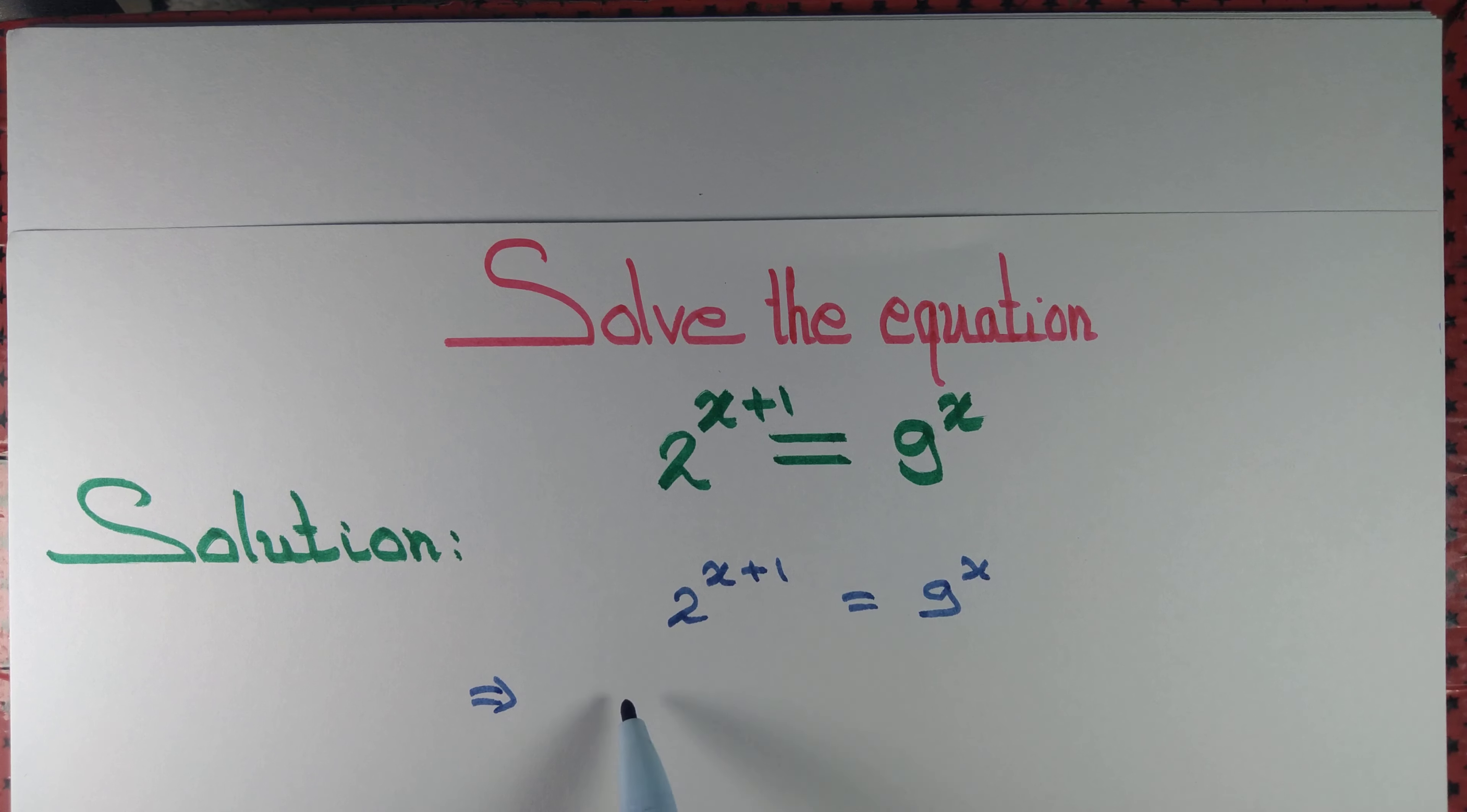Now let's write 2 to the power x plus 1 as 2 to the power x into 2, and 9 to the power x we copy as it is.